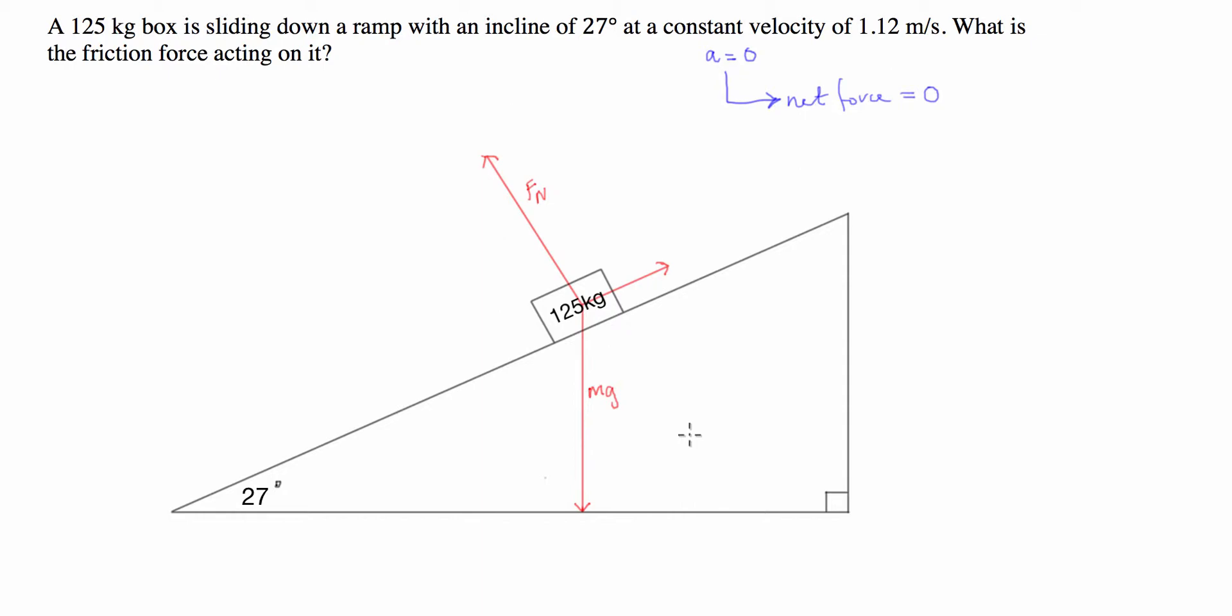So what we're going to do first is calculate the magnitude of the mass vector which is parallel to the plane. So we're going to have to draw a triangle. Now, this is a right-angled triangle, which is similar to the large ramp that we have. Now, this angle here is also 27 degrees.